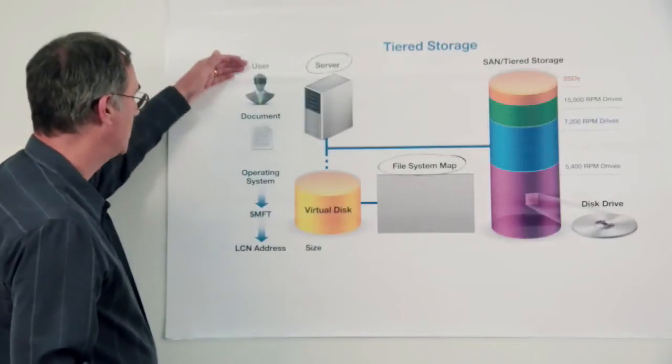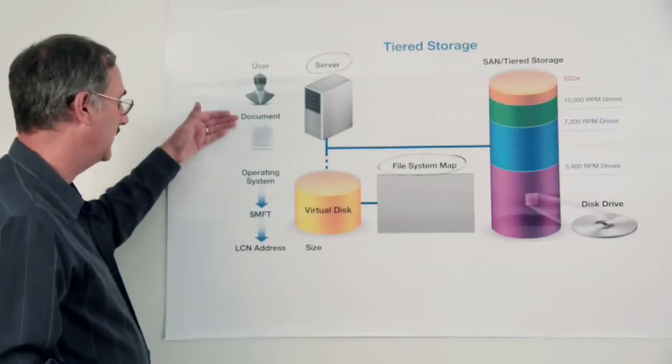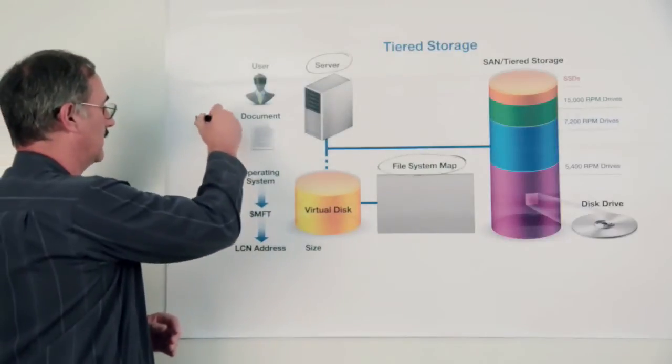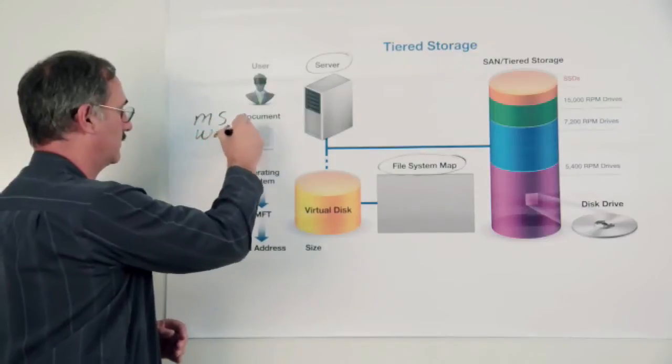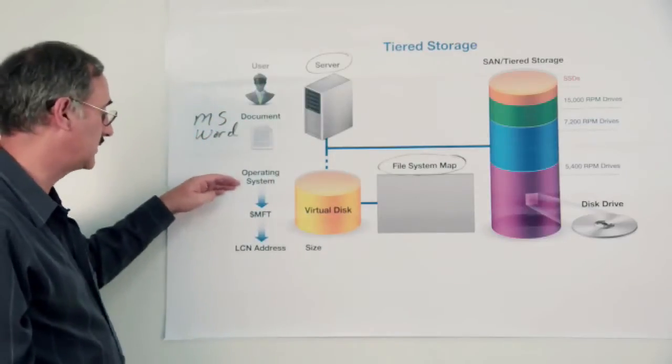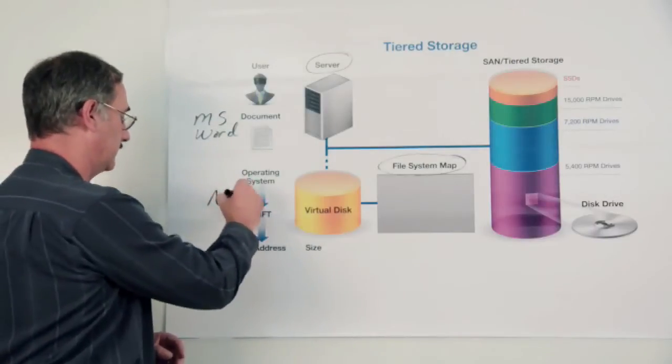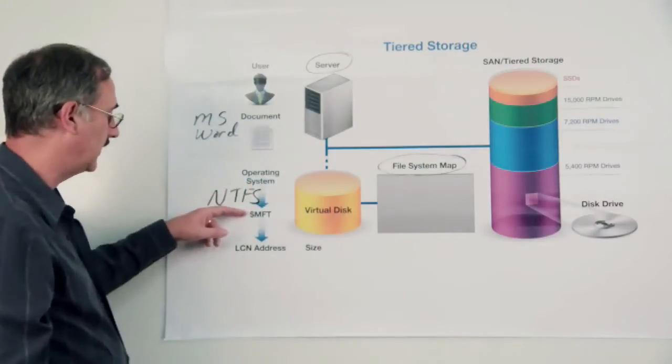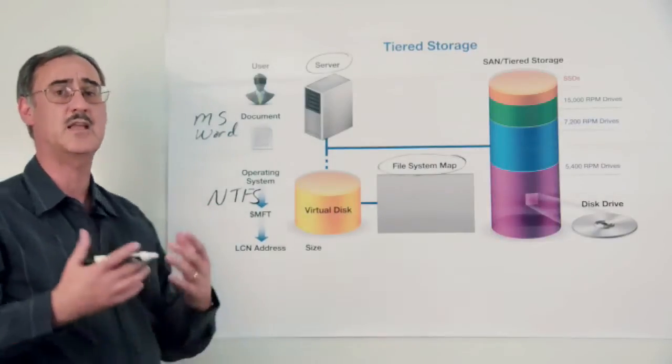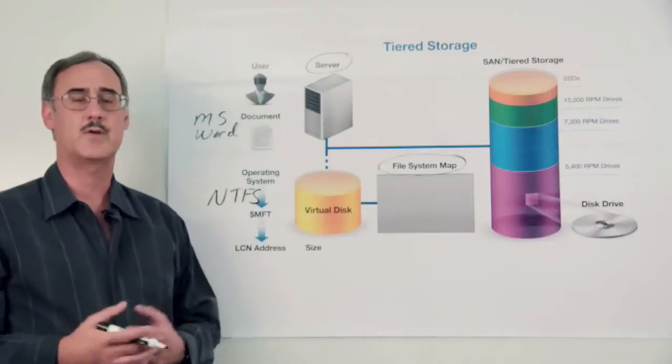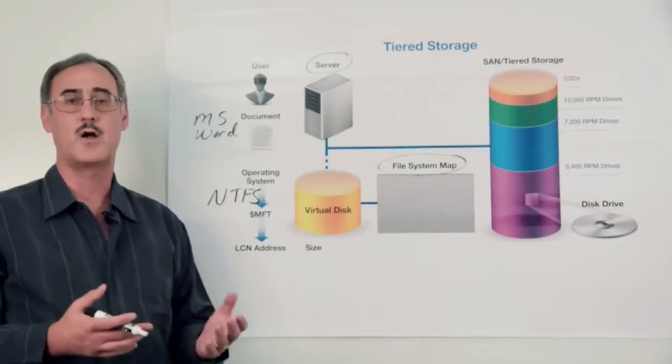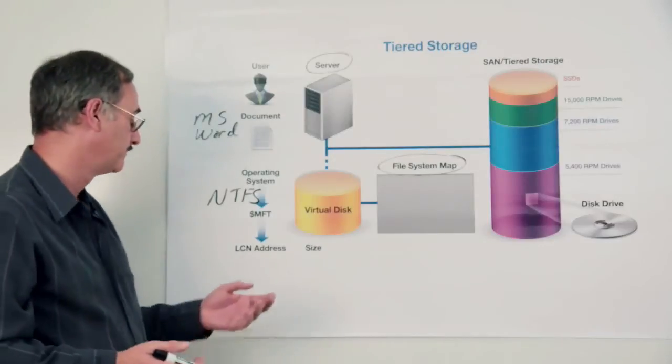Now when a user goes to access a document, it's got to go from the application that you're using, in this case, Microsoft Word. It's going to talk to the Windows operating system, which talks to the NTFS file system, dealing specifically with what's known as the master file table. This is like a table of contents. It knows everything from security attributes all the way down to what pieces are involved in an individual file.